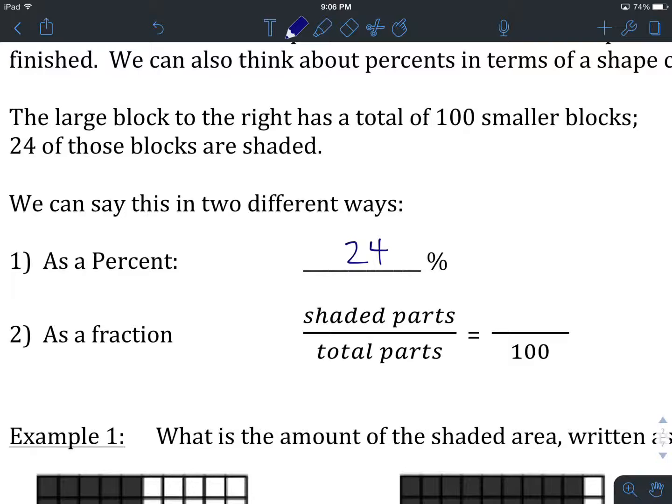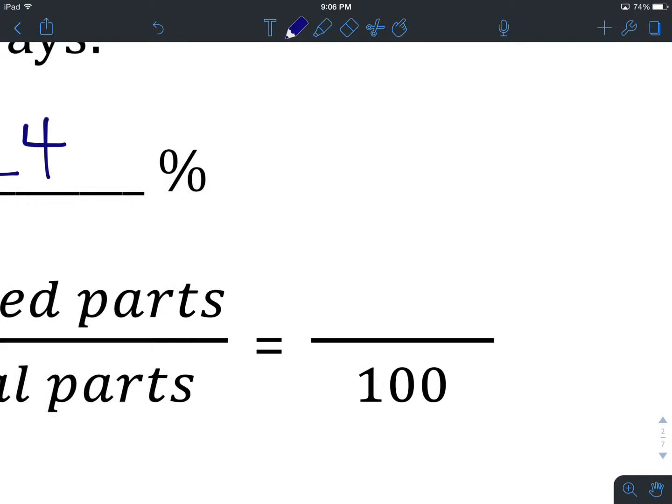A second way to write a percent is as a fraction, where the number of shaded parts is the numerator and the total number of parts is the denominator. If we're talking about percents, the total number of parts is always going to be 100. And the number of shaded parts, in the case of this big square, is going to be 24.